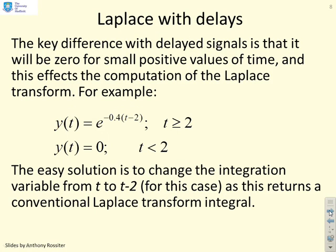Well, there's a very simple secret. You will notice that if you've got a delayed signal, then the output is 0 for small positive values of time. I've demonstrated that here by saying y(t) is 0 for t less than 2. For this particular signal, I've done e^(-0.4(t-2)). So I've said the value is 0 for small values of time, and then you're OK for t greater than or equal to 2. Now, if you want to find the Laplace transform of something like this, the easiest way to do it is to change the integration variable from t to t minus 2. And we'll show on the next slide how you might do that.